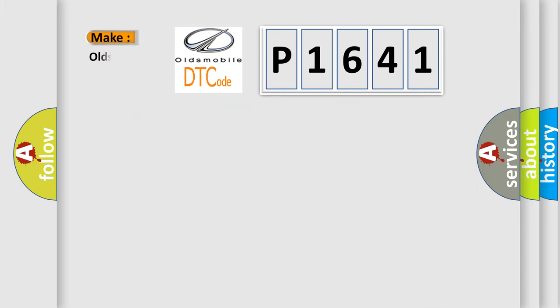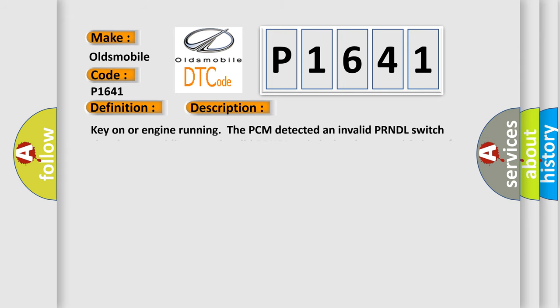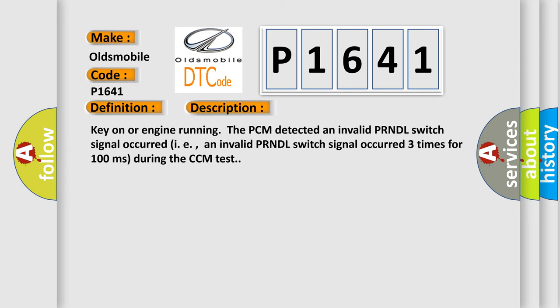What does the diagnostic trouble code P1641 interpret specifically for Oldsmobile vehicles? The basic definition is: R or T transmission range switch circuit malfunction. The PCM detected an invalid PRNDL switch signal — specifically, an invalid PRNDL switch signal occurred three times for 100 milliseconds during the CCM test.